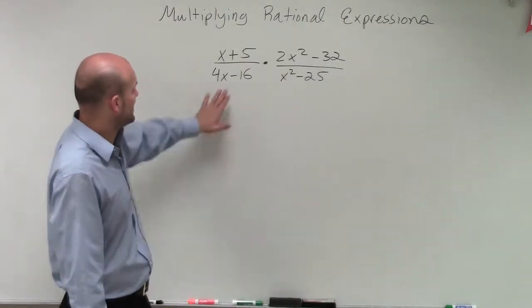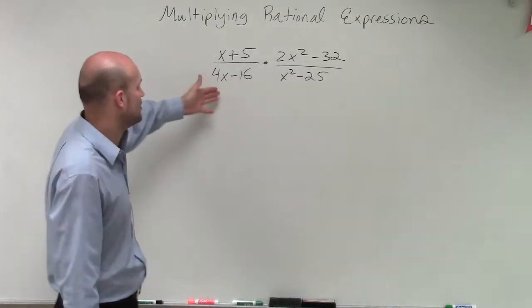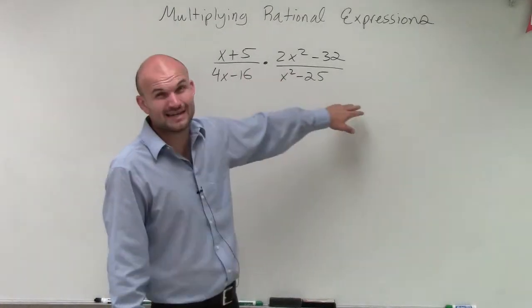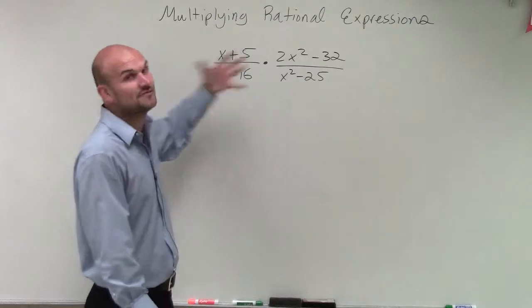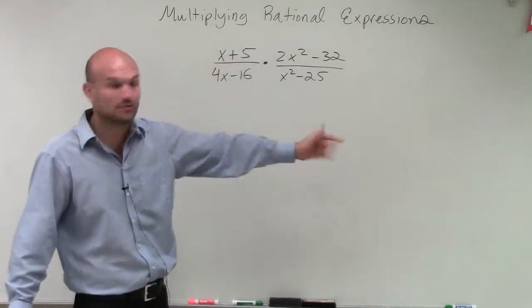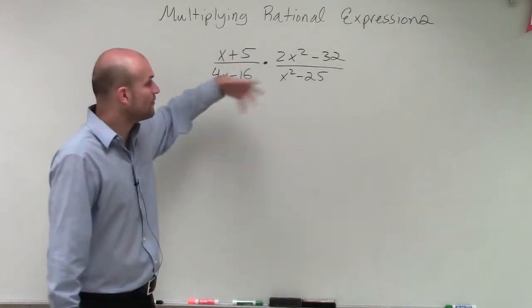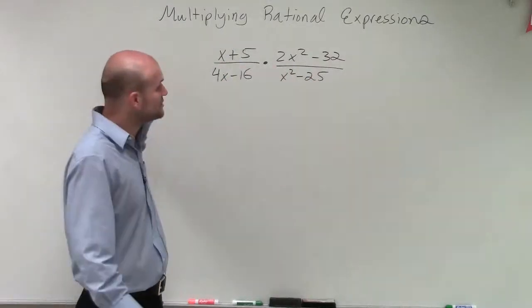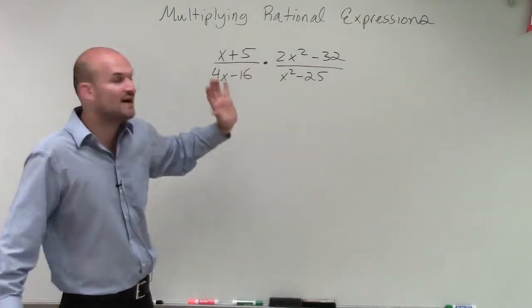And one thing we can always look at is when looking at this, we know we could always set a restriction on both of our denominators by setting them equal to 0, even after our simplified form, and just say x cannot equal those values. But when looking at this, before I even apply my operations, before I try to multiply these, I want to simplify all these terms.